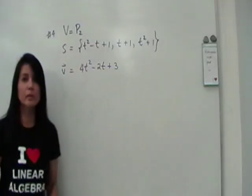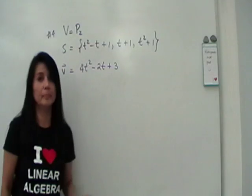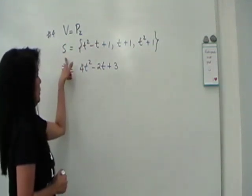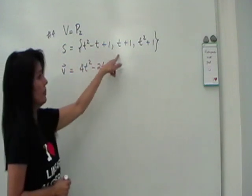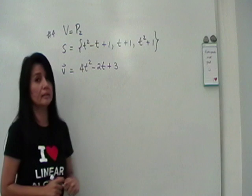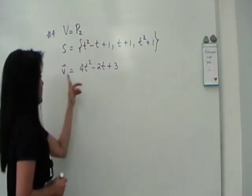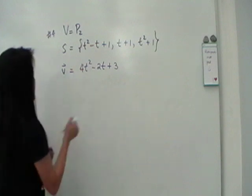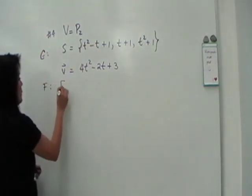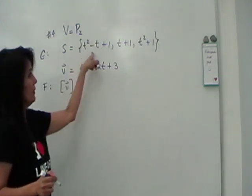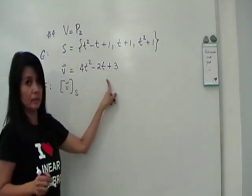All right, so if we look at exercise number 4 from our book, vector space is, again, P sub 2. And let's say our ordered basis S consists of these three polynomials, T squared minus T plus 1, T plus 1, and T squared plus 1. Our task is to find V, to find the coordinate vector,